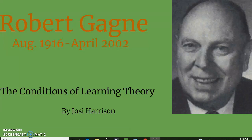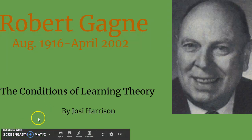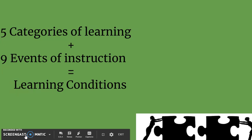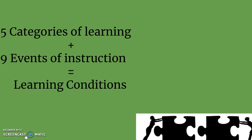My name is Josie Harrison and today I will be telling you guys about Robert Gagne's conditions of learning theory. The two main concepts of Gagne's learning theory are five categories of learning and nine events of instruction that create the learning conditions.